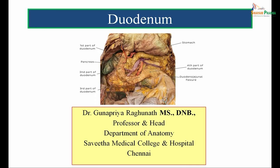Duodenum is the most proximal part of the small intestine. In this cadaver specimen, this is the duodenum. The duodenum receives the acidic contents from the stomach, and from the duodenum, the partially digested food material is passed on further into the jejunum, the next part of the small intestine. In today's session, we will be studying completely about the anatomy of duodenum.